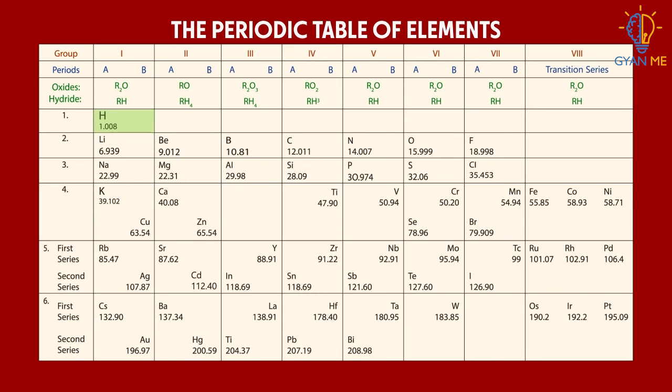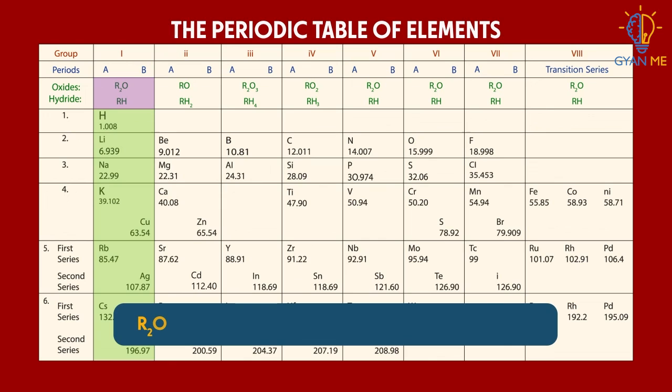Thus, all the elements in the first column have similar oxides and hydrides with their general formulae written on the top of the column. For example, as R2O and RH, where R is the representation of the symbol of that element.